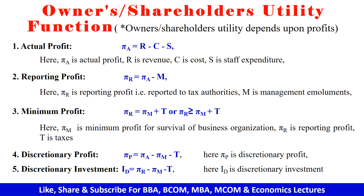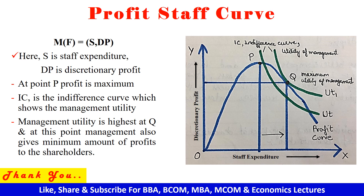This discretionary investment increases the utility of both the managers and the shareholders. We will discuss this Williamson concept through the profit-staff curve. On the y-axis, we have discretionary profit and on the x-axis, we have the staff expenditure. In this formula, S is the staff expenditure and DP is the discretionary profit. At point P, the profit is maximum, and IC, which is the indifference curve, shows the managerial utility. The managerial utility is higher at UT1. As shown in this graph, at point Q, the managerial utility is maximum, and at this point, the management also gives the minimum amount of profit to the shareholders.